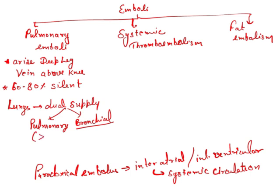Sudden death may occur if pulmonary circulation is obstructed by more than 60 percent. At that point, the dual supply will also not work, causing sudden death. Additionally, recurrent pulmonary embolism along with pulmonary hypertension can lead to cor pulmonale.